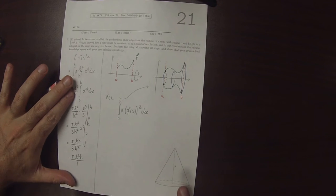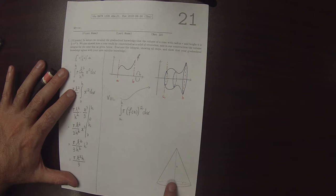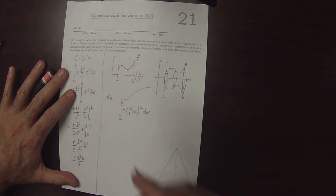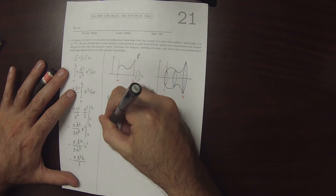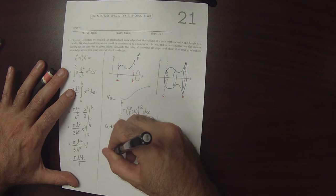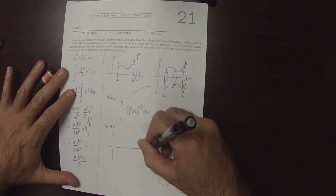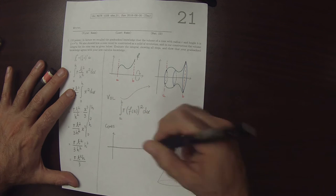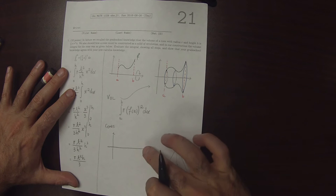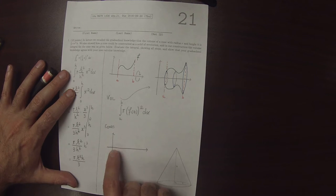And so taking this idea from lecture, we observed that this cone, we could draw it in the following way. Take the cone and turn it sideways so that its vertex is at the origin.